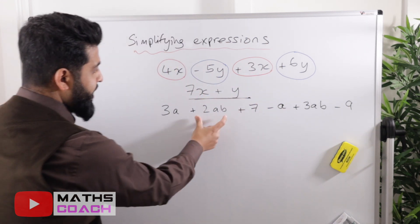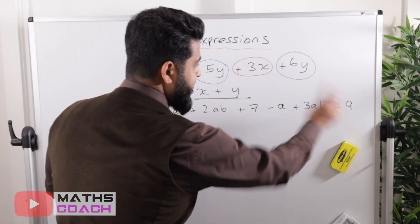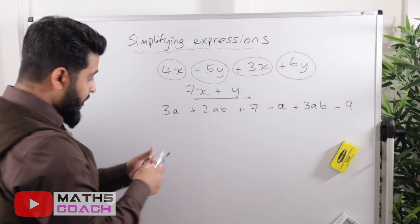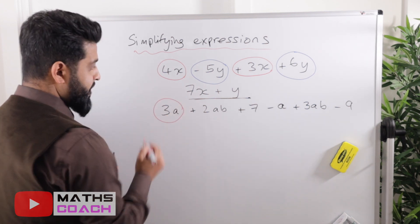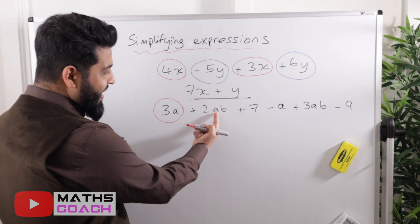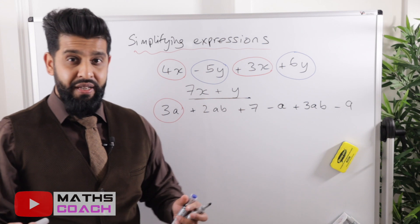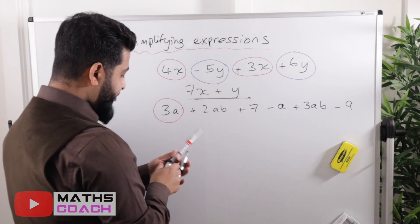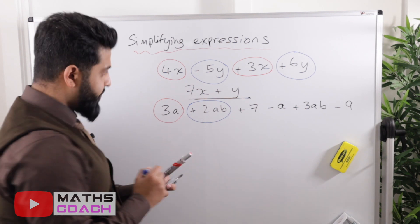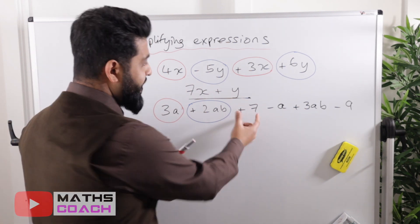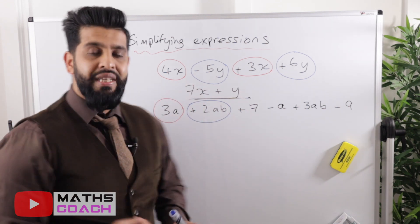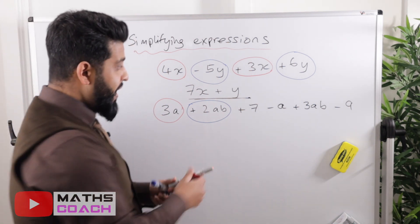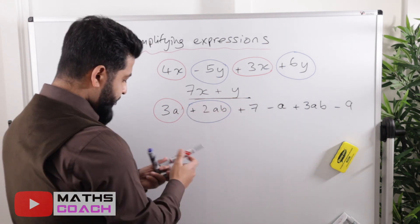Now let's do the same with the second example: 3a plus 2ab plus 7 minus a plus 3ab minus 9. I'll look for the same families. Circling 3a — note that 2ab contains an 'a' but it belongs to the ab family, not the a family. These are not the same terms, so I highlight them differently. The number 7 doesn't belong to the a or ab family; it's its own family of numbers.